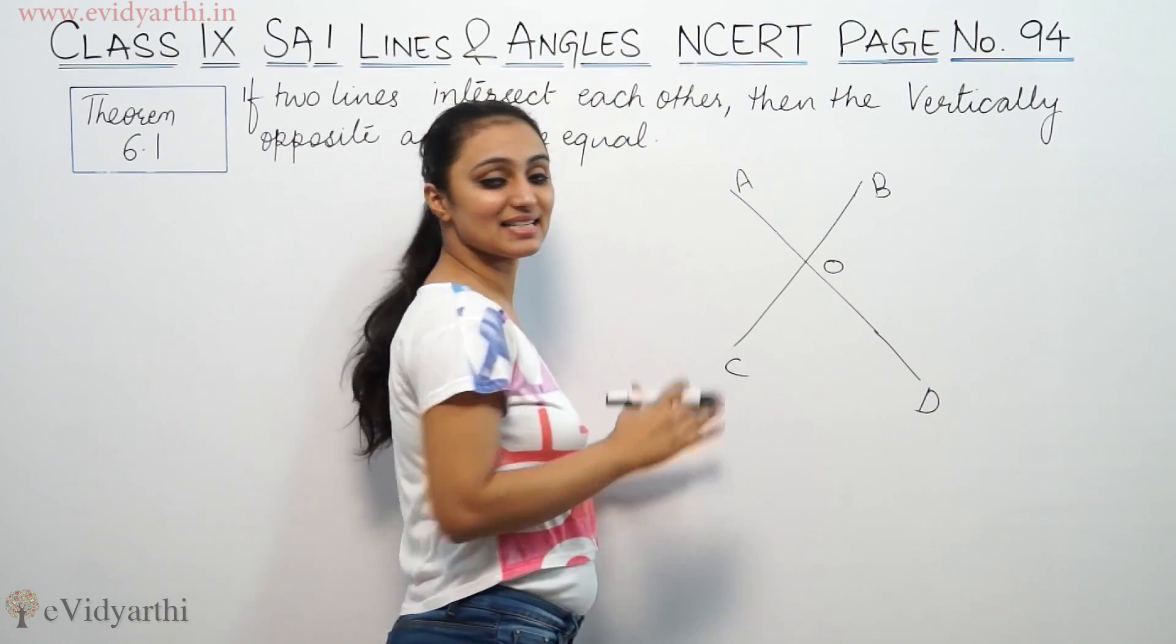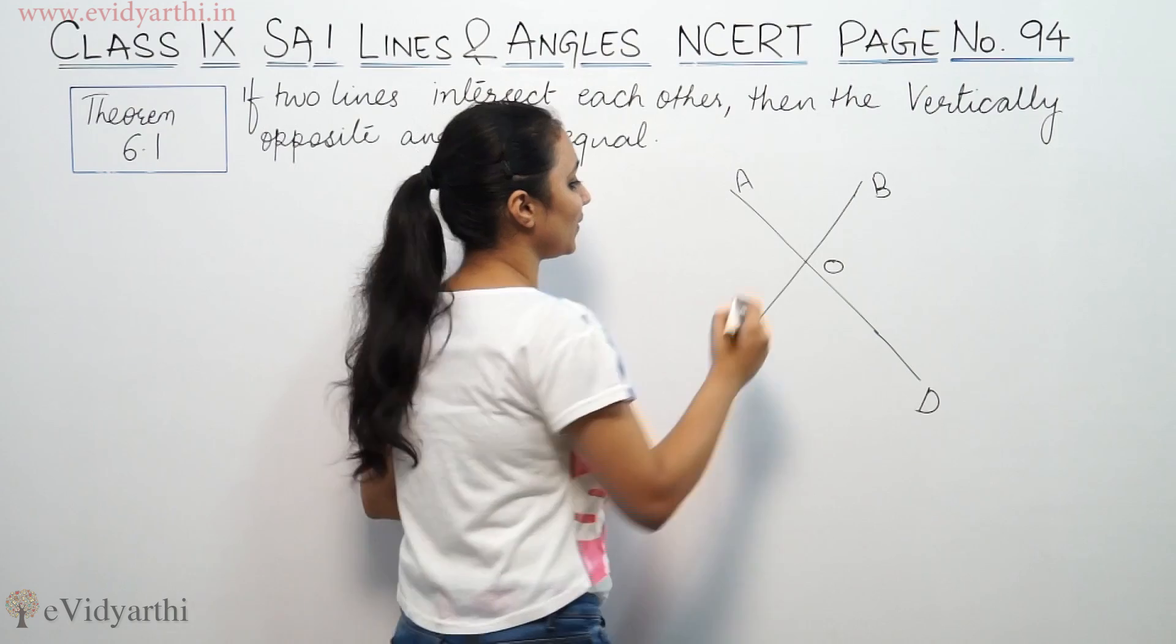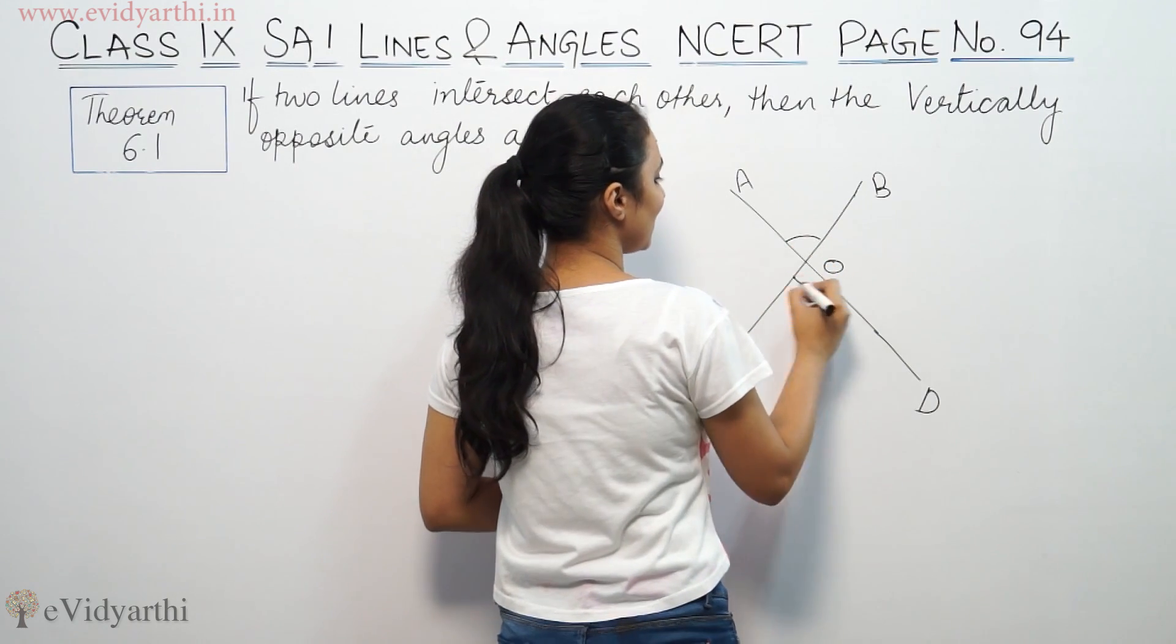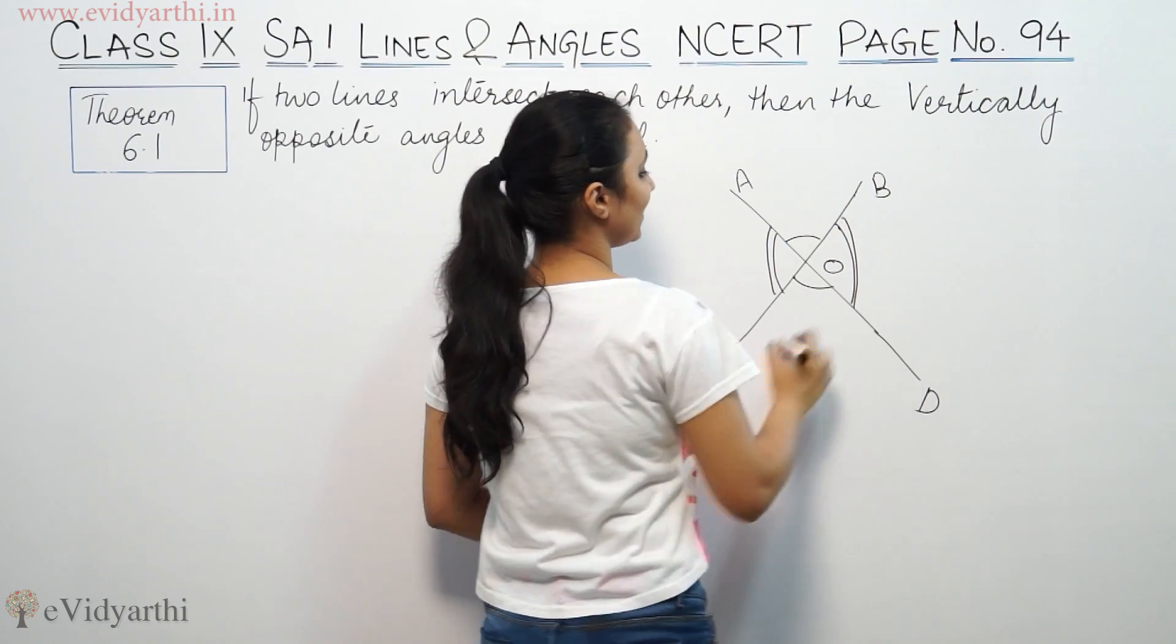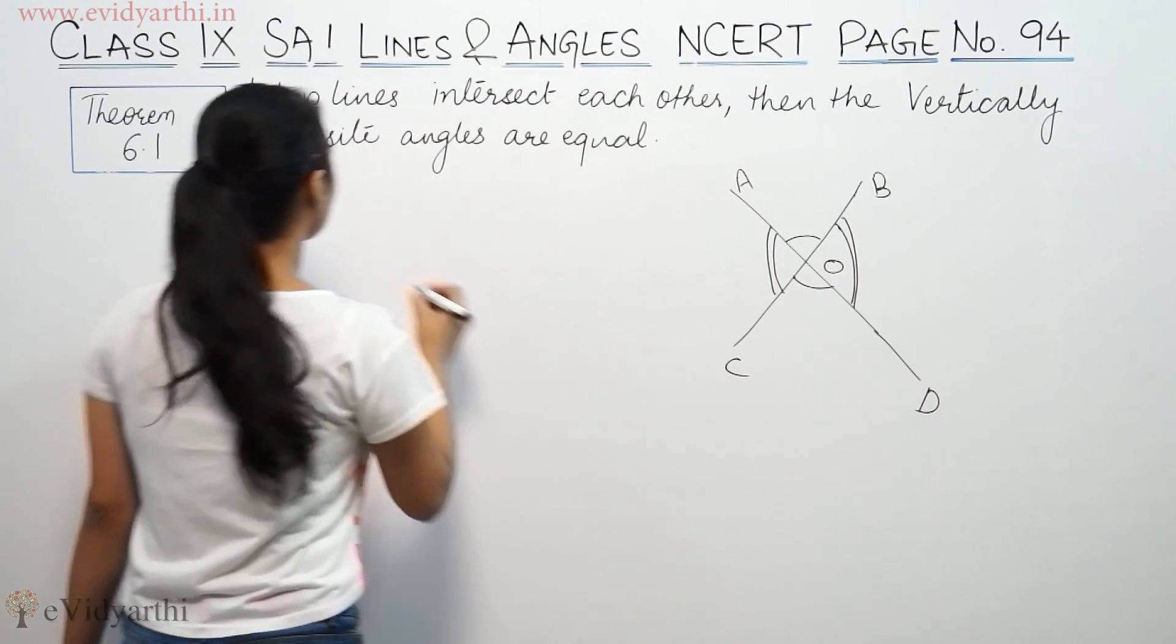If you have to prove that the lines intersecting, then the vertically opposite angles are equal. That means this angle is equal and this angle is equal. We have to prove this.